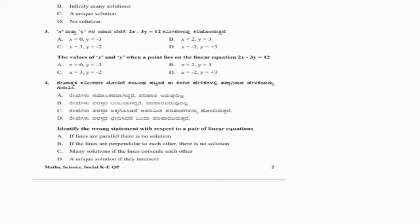The next question is: the values of x and y when the point lies on the linear equation 2x minus 3y is equal to 12. Here it is very easy, so you can check the equation with the options given.